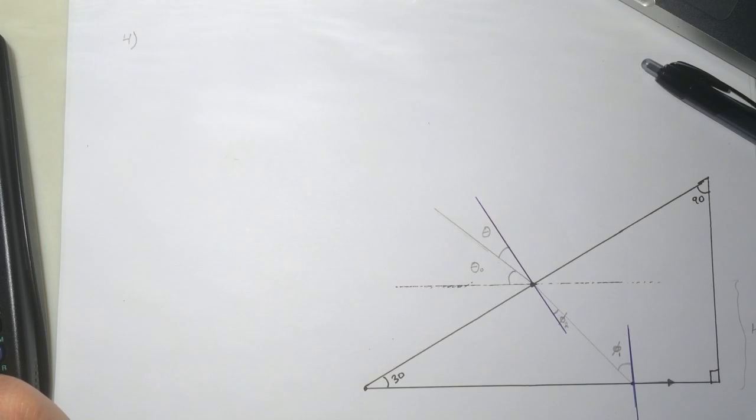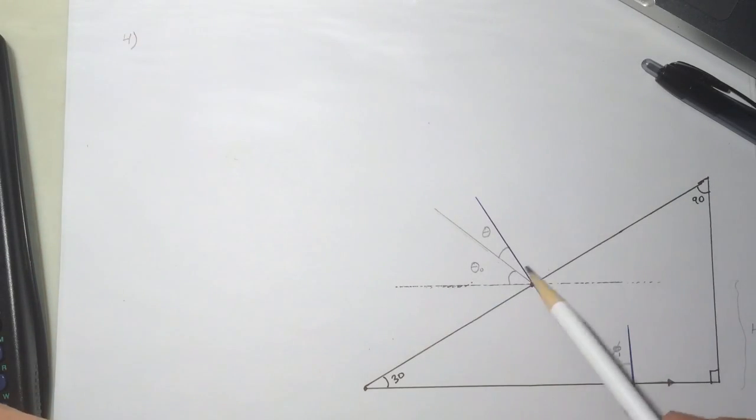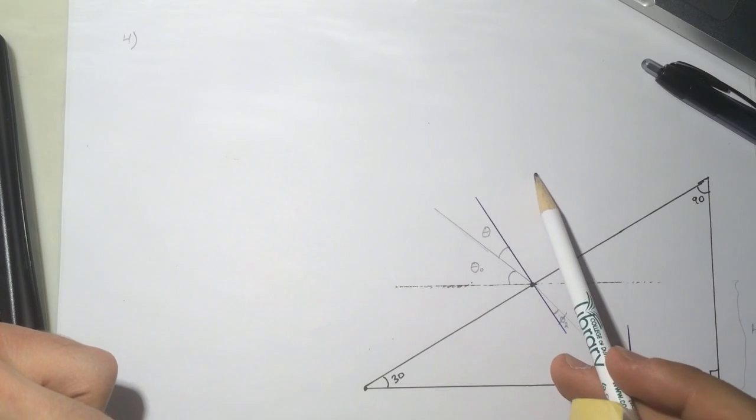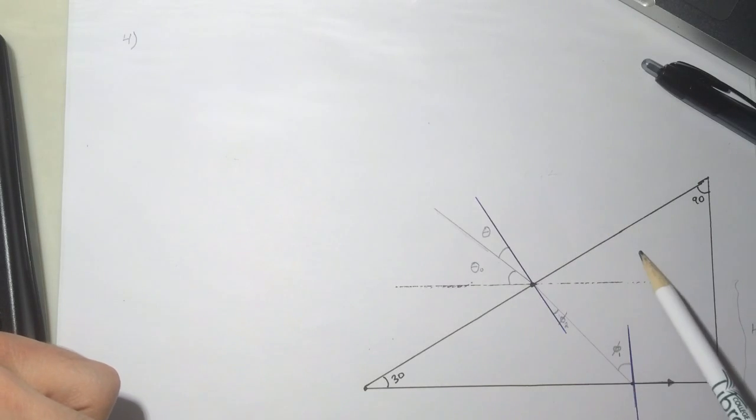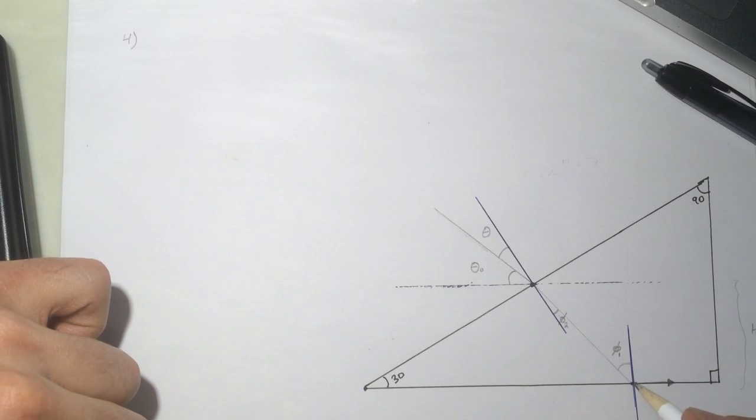The maximum value of theta 1 for which the incident beam experienced total internal reflection at the horizontal surface of the prism. I was reading the problem wrong way. I thought the light is coming here and it should reflect out of it, which is impossible because this n here is less than this n, and the total reflection should happen from bigger n to a less n.